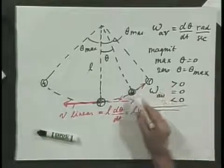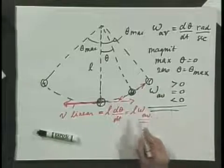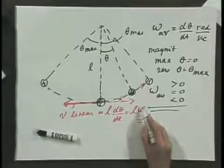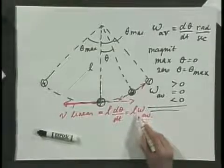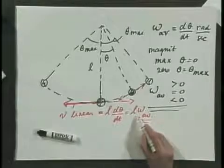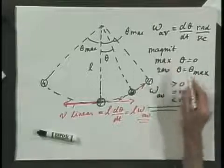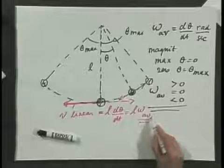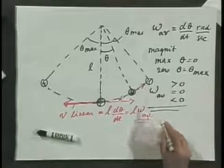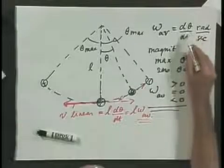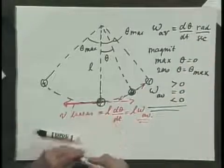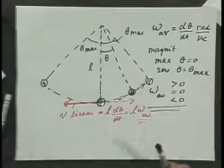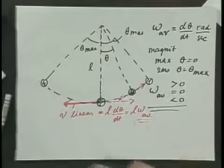One direction could be called plus and the other minus. The magnitude can also greatly vary, because when the angular velocity reaches a maximum as the object goes through equilibrium, dθ/dt is maximum, so the linear velocity is also a maximum. So much for the angular velocity.